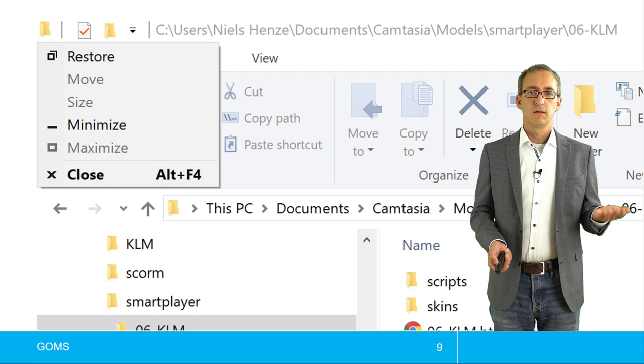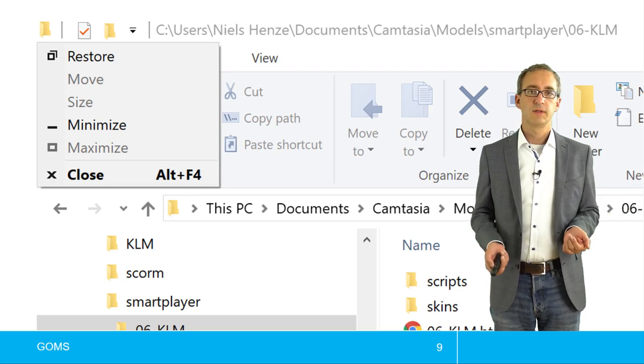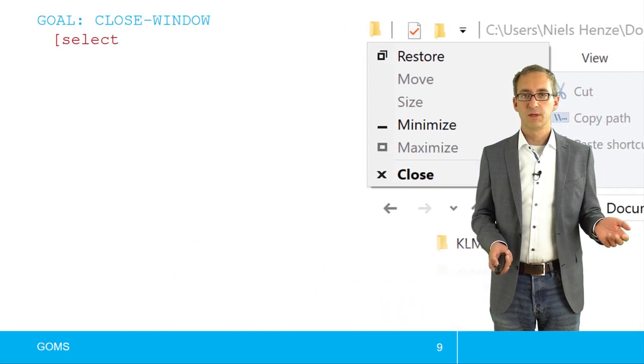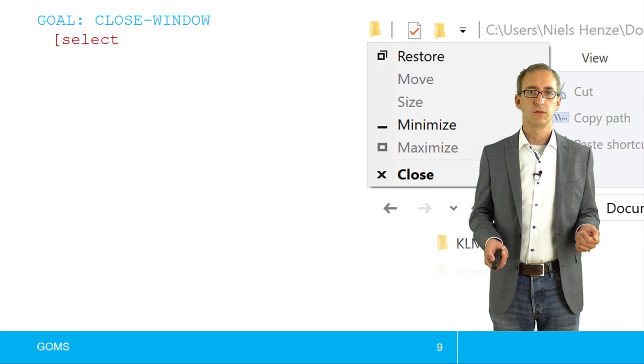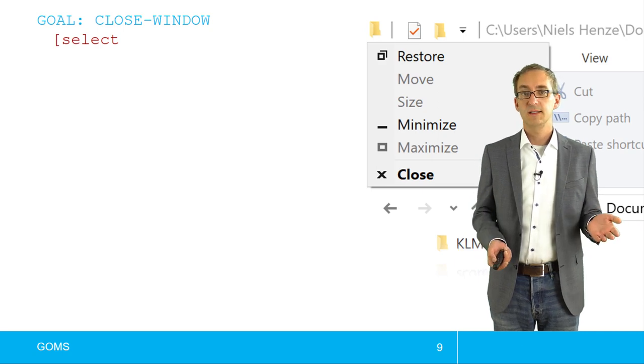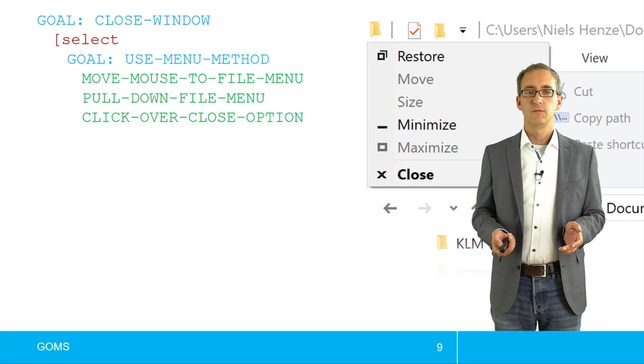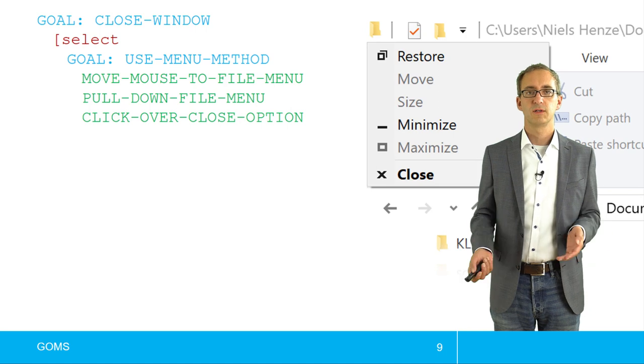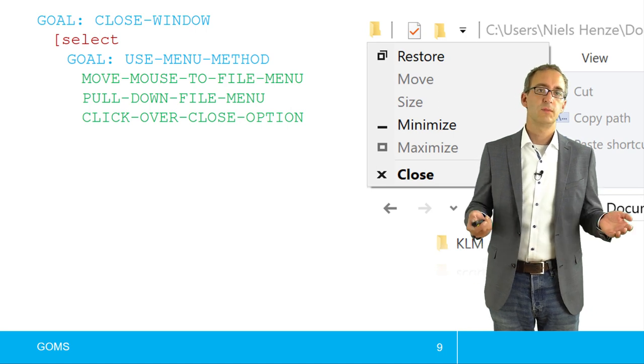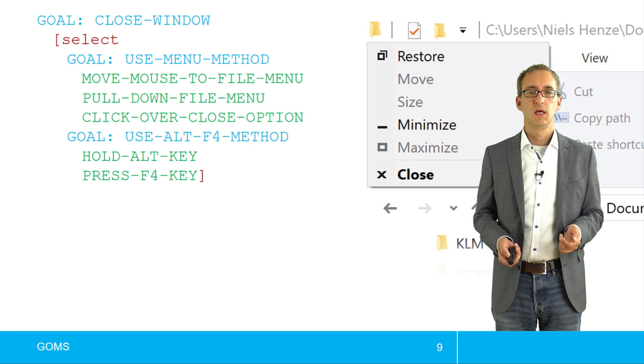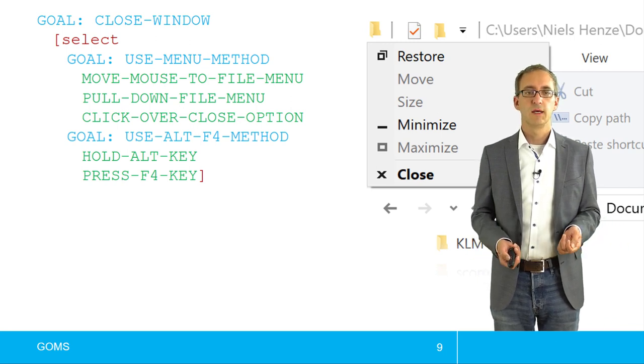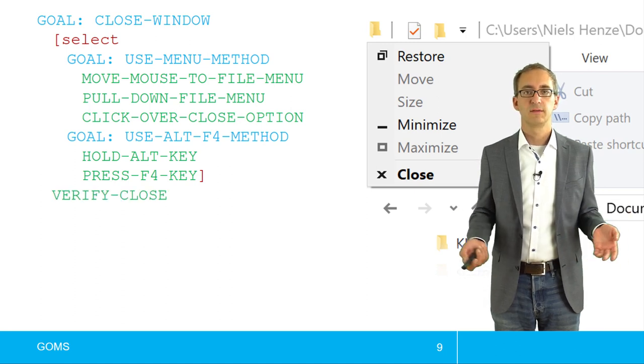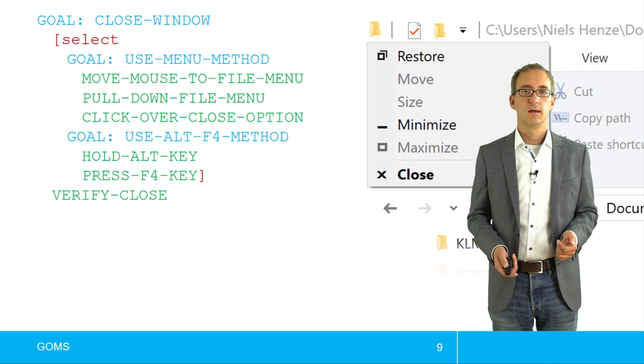Okay, so I can open the menu and hit close or I can press Alt F4. How would that look like in GOMS? Well, my goal is I want to close the window. And then I have at least these two different methods. The first one could be I use a menu. I move the mouse to the file menu, I pull down the file menu, I click over the close option. But there could be another possibility, which is use the Alt F4 method. I hold the Alt key, I press the F4 key and then I could verify that it's closed. But this is common for both methods.